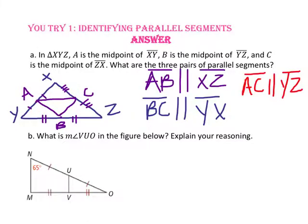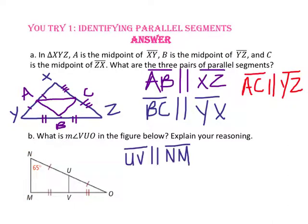For part B, what is the measure of angle VUO in the figure below? Explain your reasoning. Because side UV is the mid-segment of triangle NOM, side UV is parallel to side NM. When two segments are parallel and cut by a transversal, the corresponding angles are congruent. Since the measure of angle MNU is 65 degrees, and angle VUO is a corresponding angle, the measure of angle VUO is also 65 degrees.